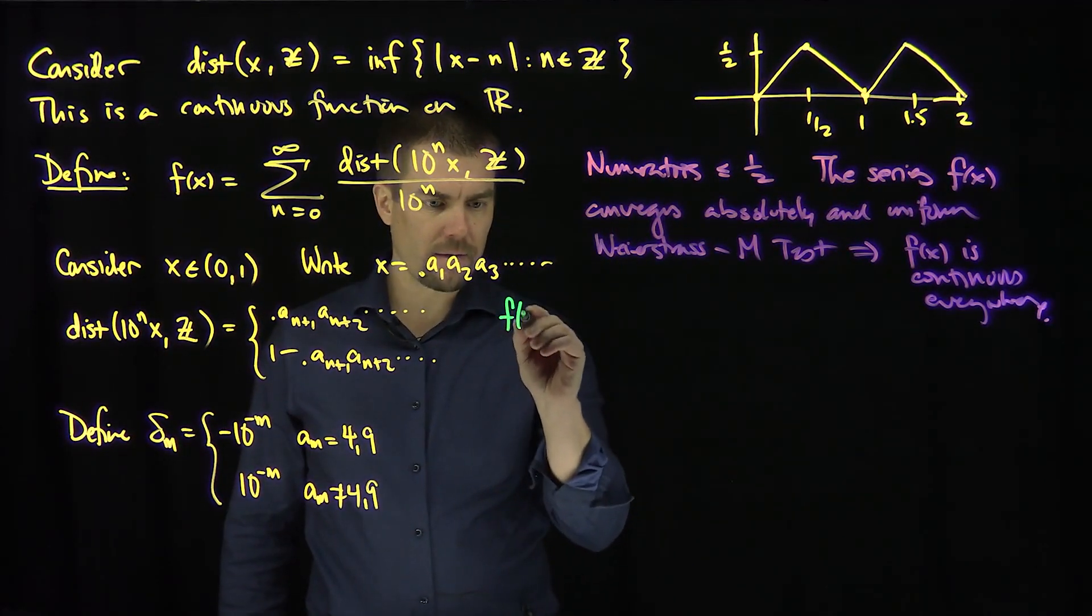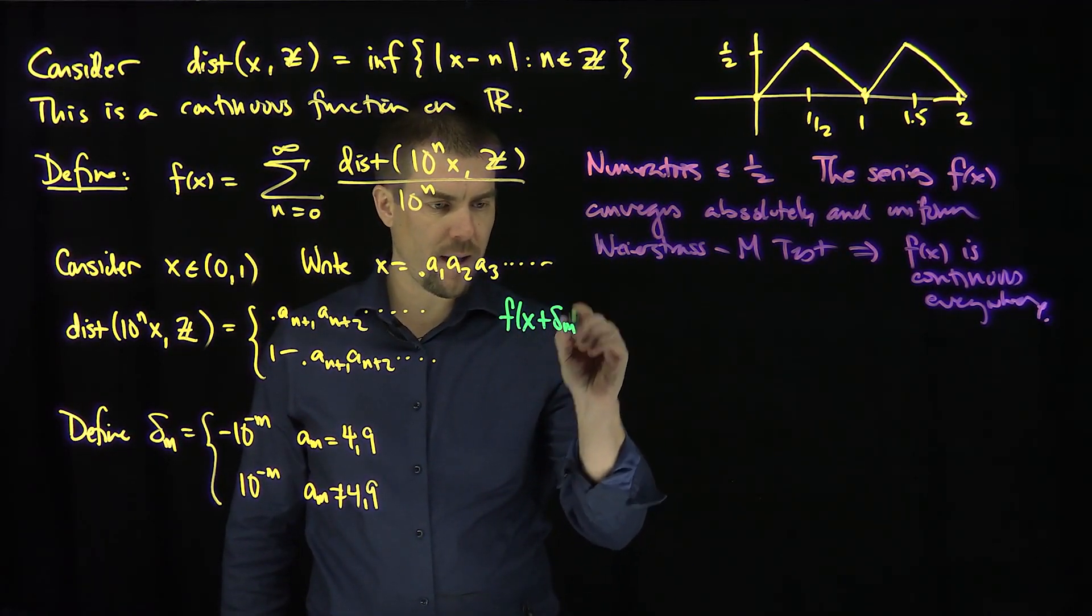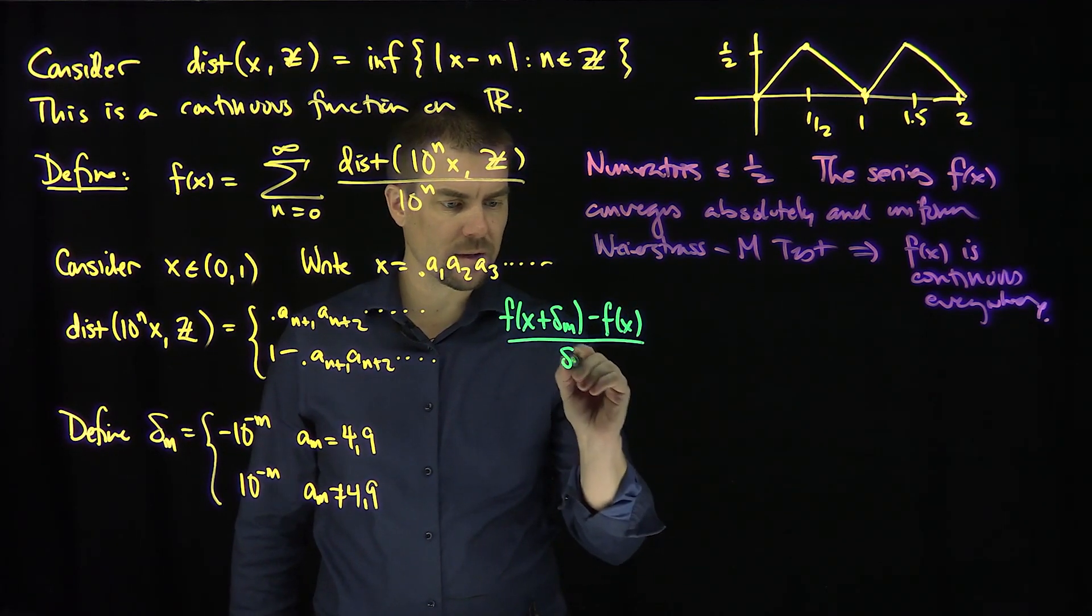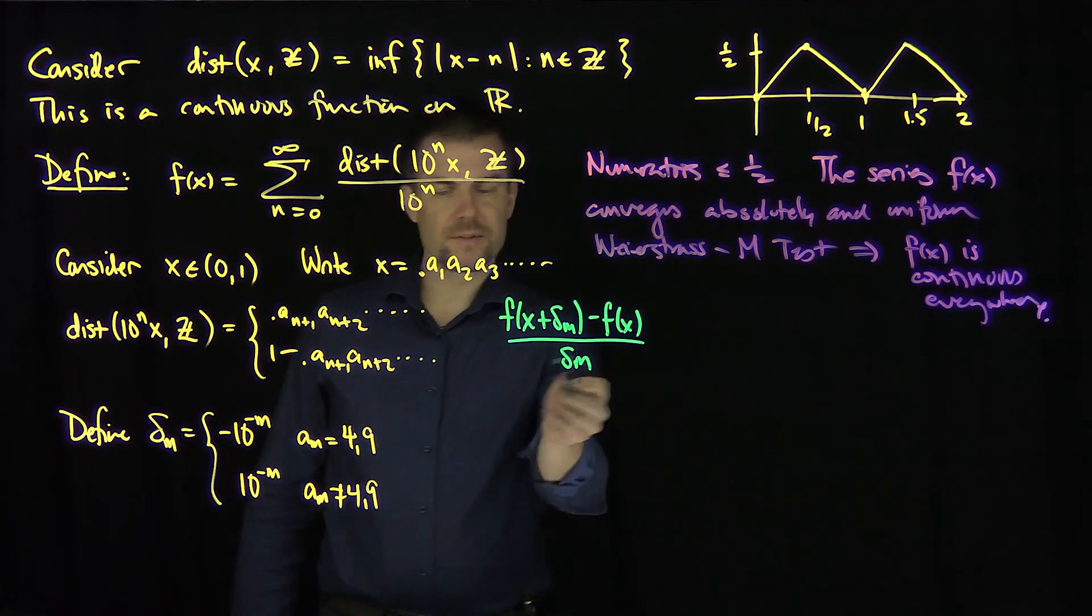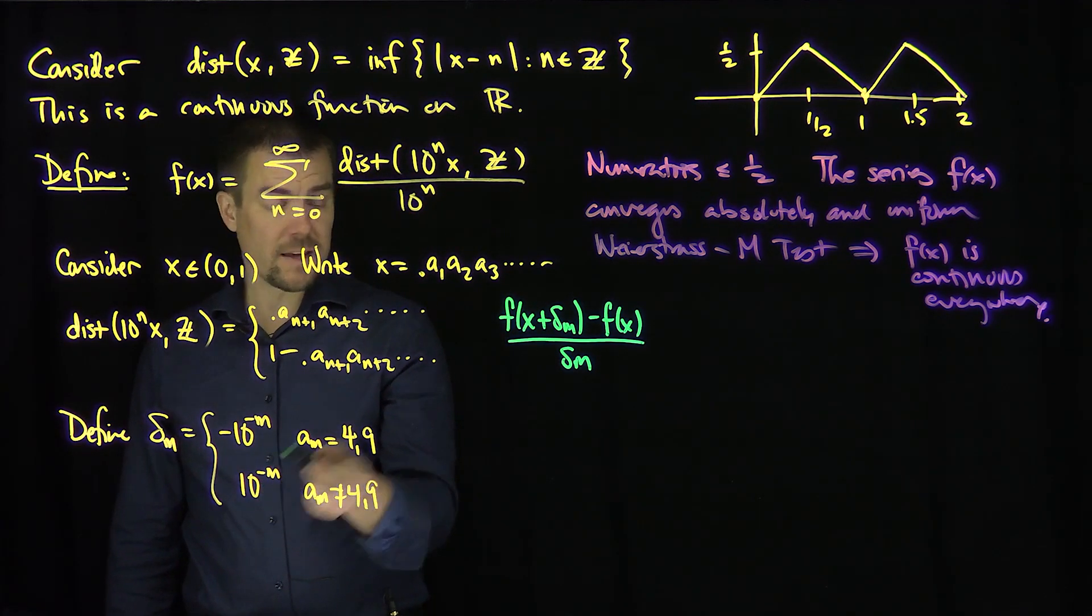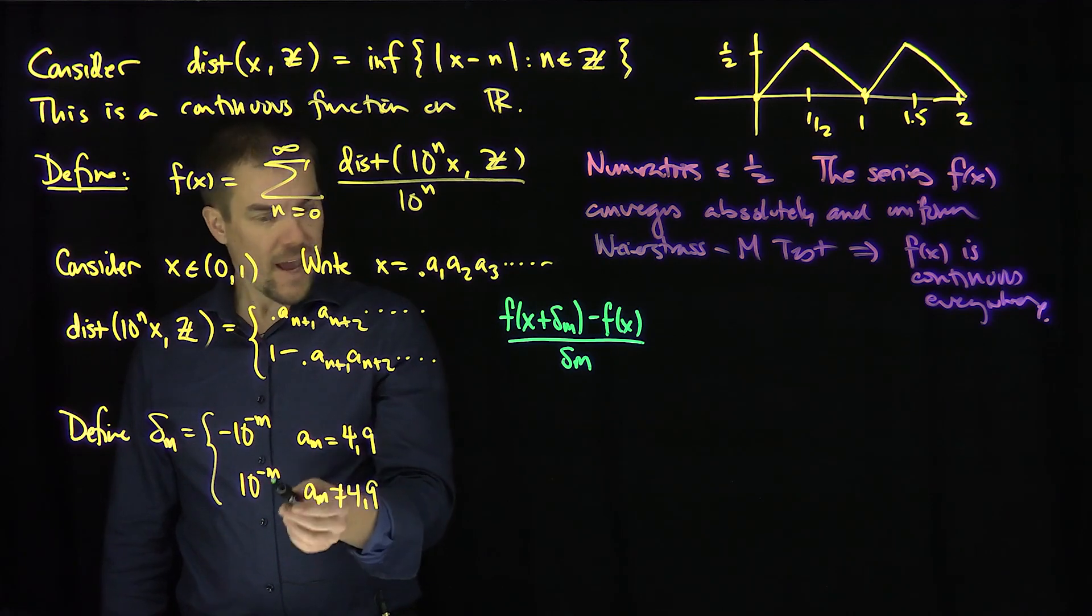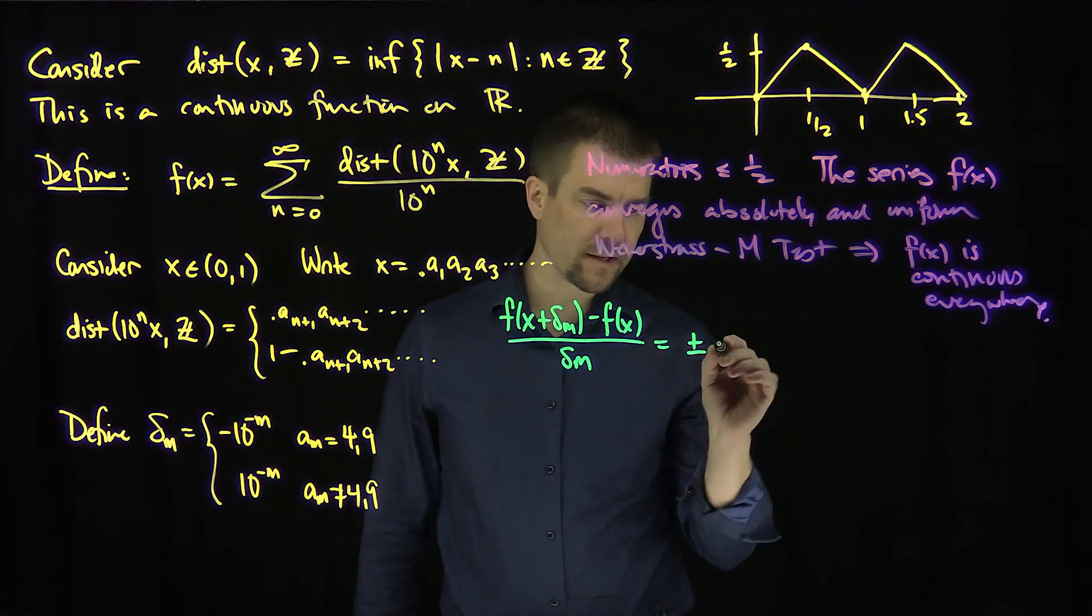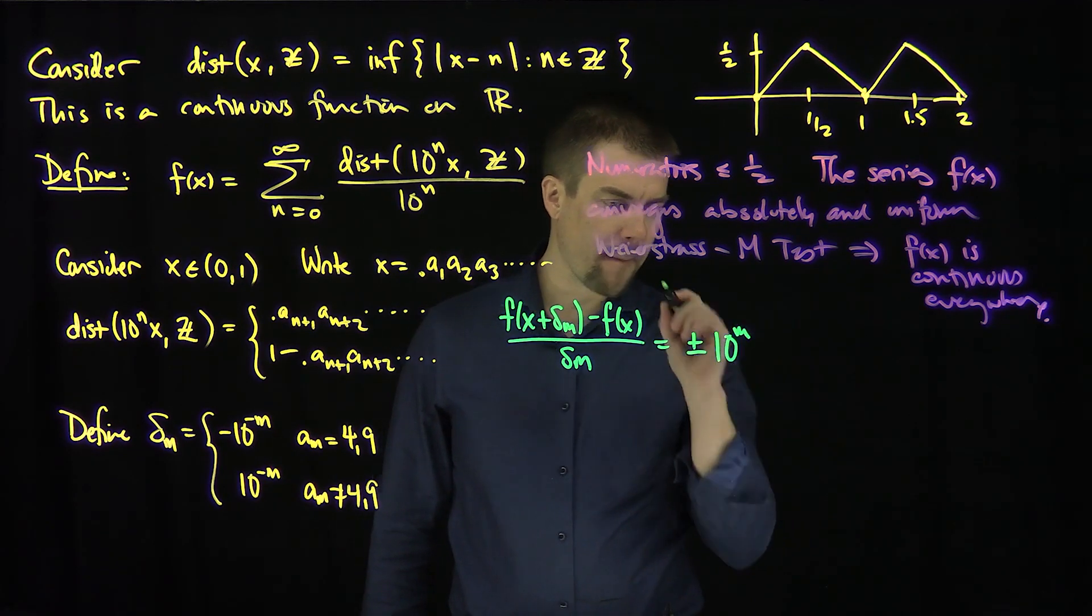I'm going to look at [f(x + delta_m) - f(x)] / delta_m. And now this delta_m in the denominator is going to account for what? That's going to give me either a plus or a minus and then a 10^m. So I'm going to write this as plus or minus, depending on what x is, 10^m.